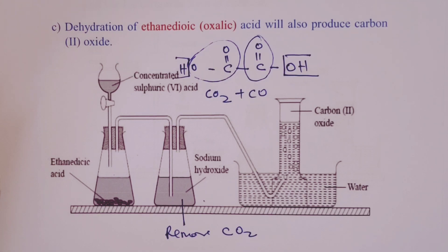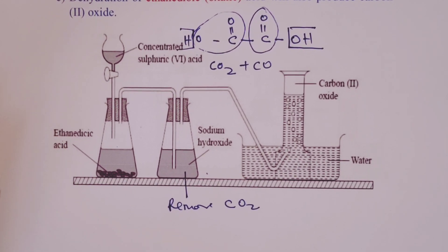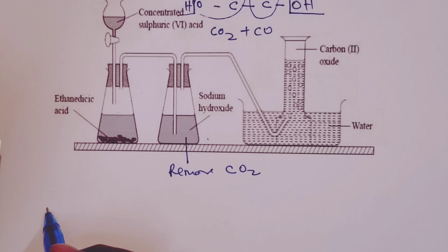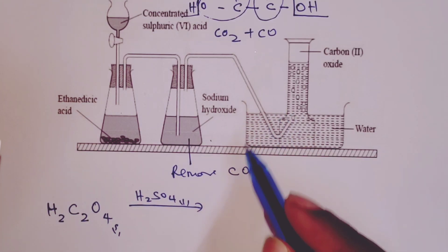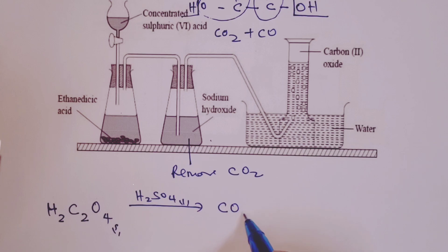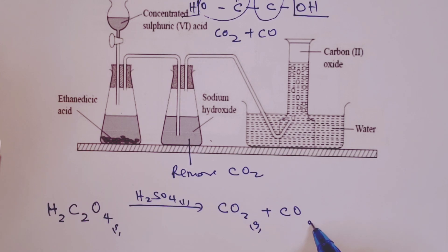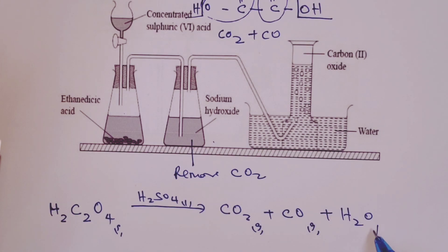When it comes to the equation for the reaction, our oxalic acid or ethanedioic acid has the formula H2C2O4. So if you dehydrate it using concentrated sulfuric acid as we have just seen up there, we get 2 gases: carbon (IV) oxide, carbon (II) oxide and water. So the moment we are able to separate the 2, we shall then collect our carbon (II) oxide as shown by the setup.